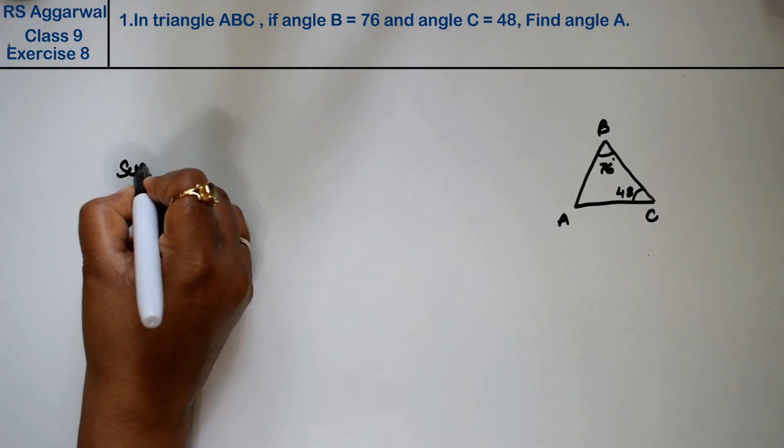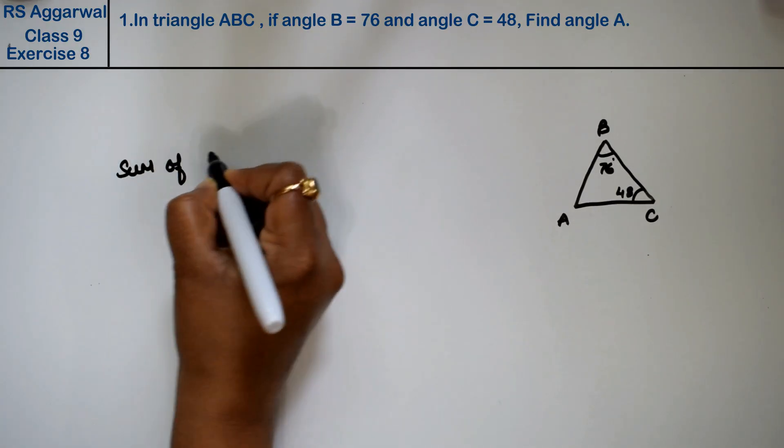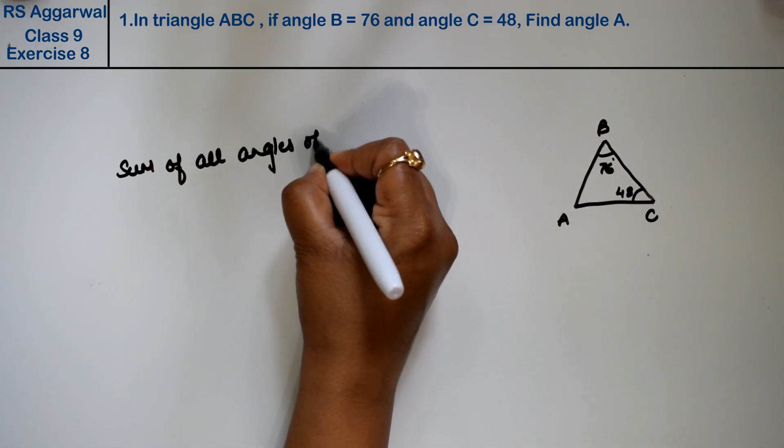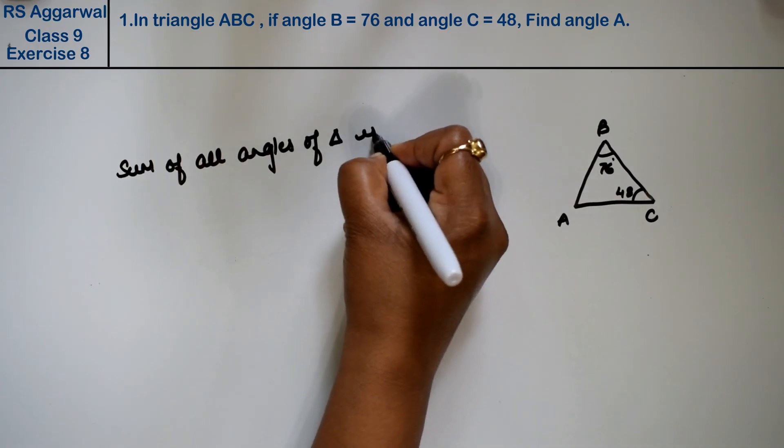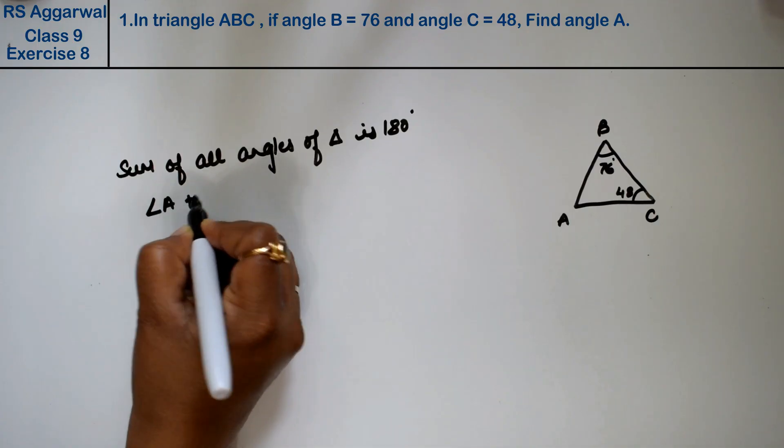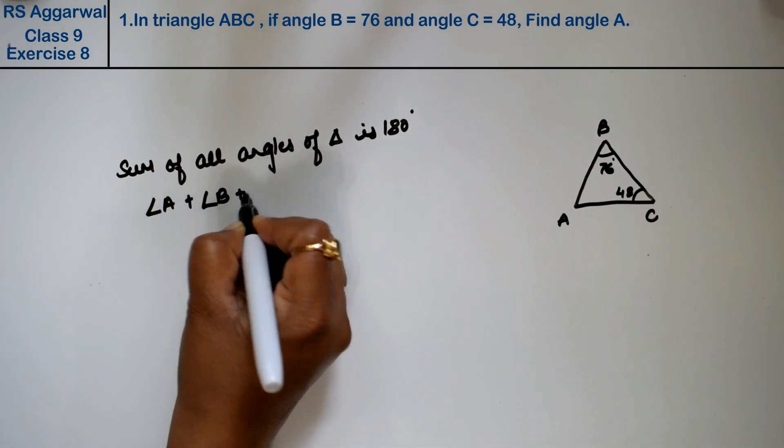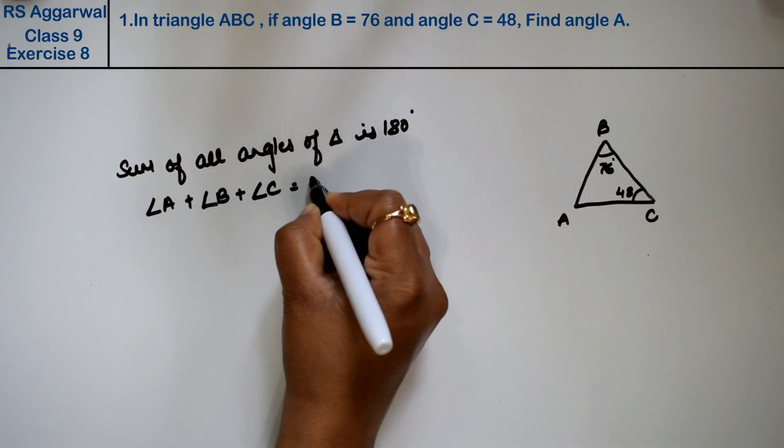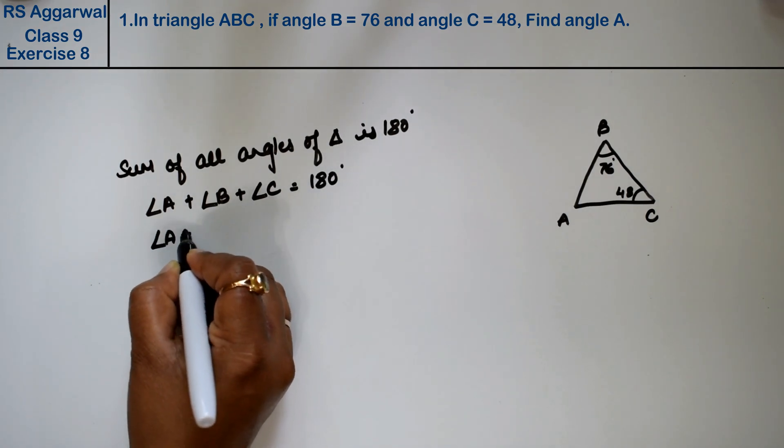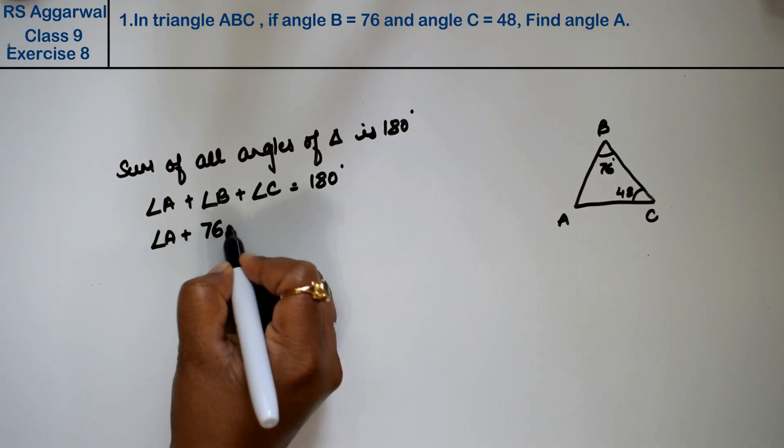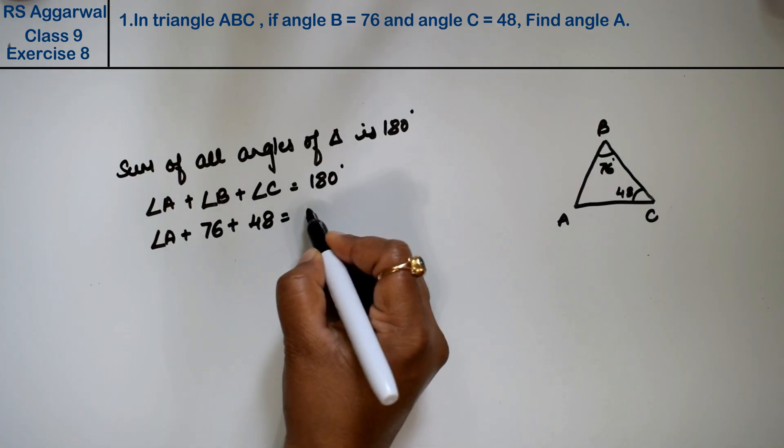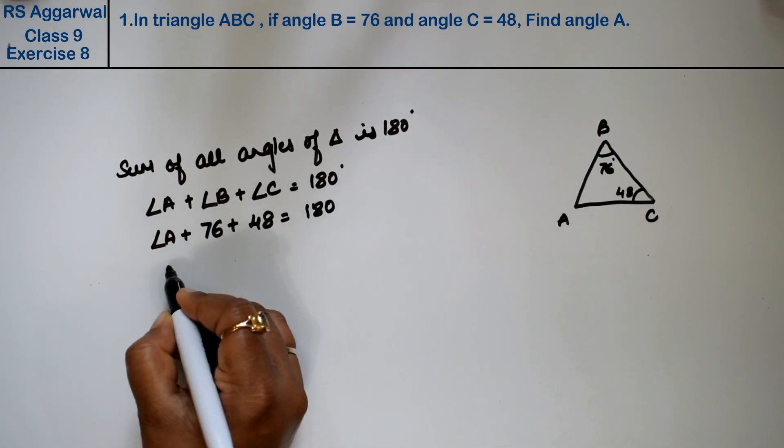Friends, we know from our introduction that the sum of all angles of a triangle is 180 degrees. So angle A plus angle B plus angle C equals 180 degrees. We need to find angle A. Angle B is given as 76 degrees, angle C is 48 degrees.